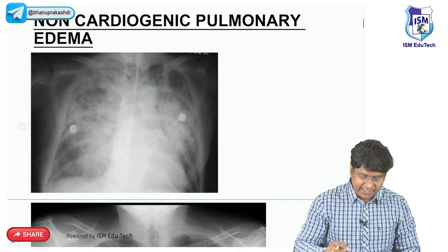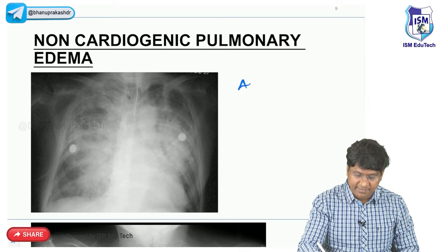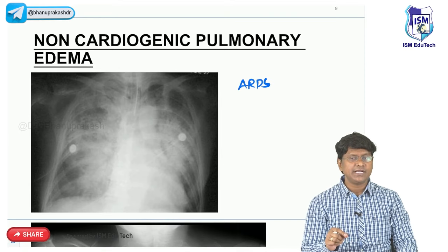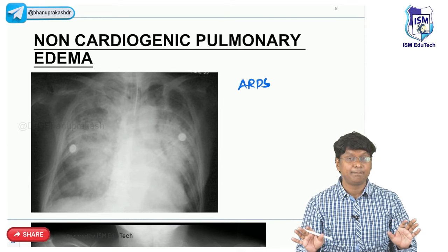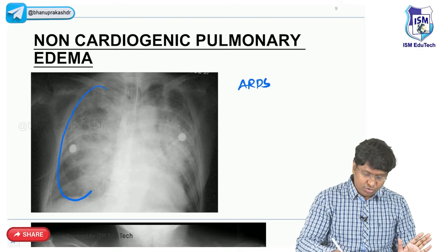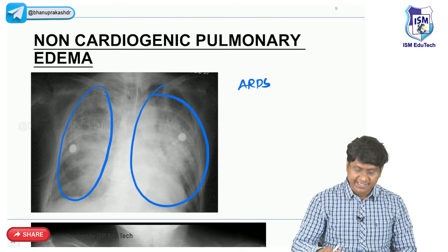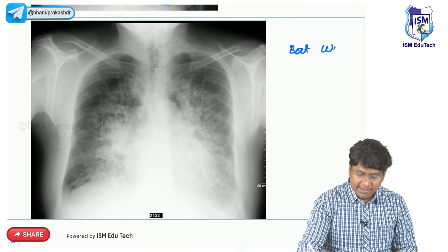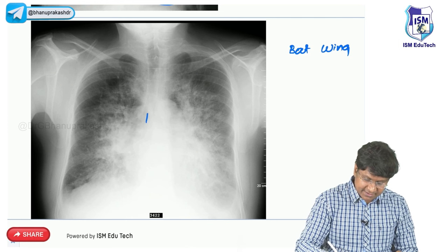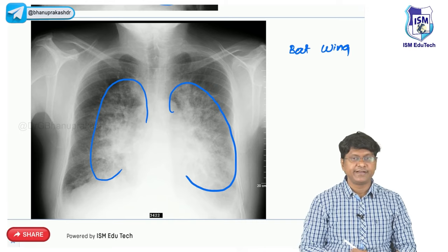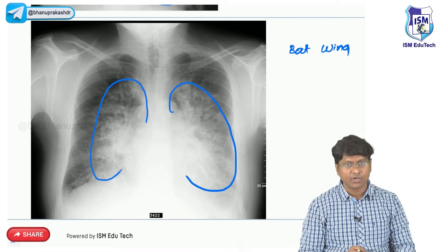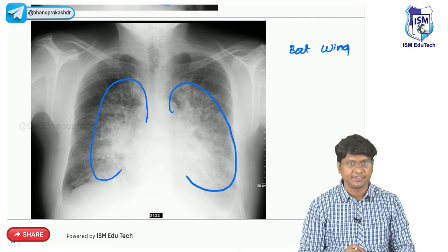You need to differentiate the chest X-ray in non-cardiogenic pulmonary edema (ARDS) from cardiogenic pulmonary edema. In non-cardiogenic pulmonary edema, you will have diffuse bilateral pulmonary opacities throughout the lung. But in cardiogenic pulmonary edema, you have the characteristic bat-wing appearance - perihilar interstitial or alveolar infiltrates will be present.